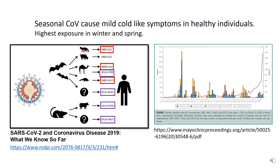All of these coronaviruses have an intermediary animal host. For example, the intermediary animal host for MERS-CoV is the dromedary camel. And the virus that we're going to talk about today, OC43, the intermediary host is thought to be cattle.